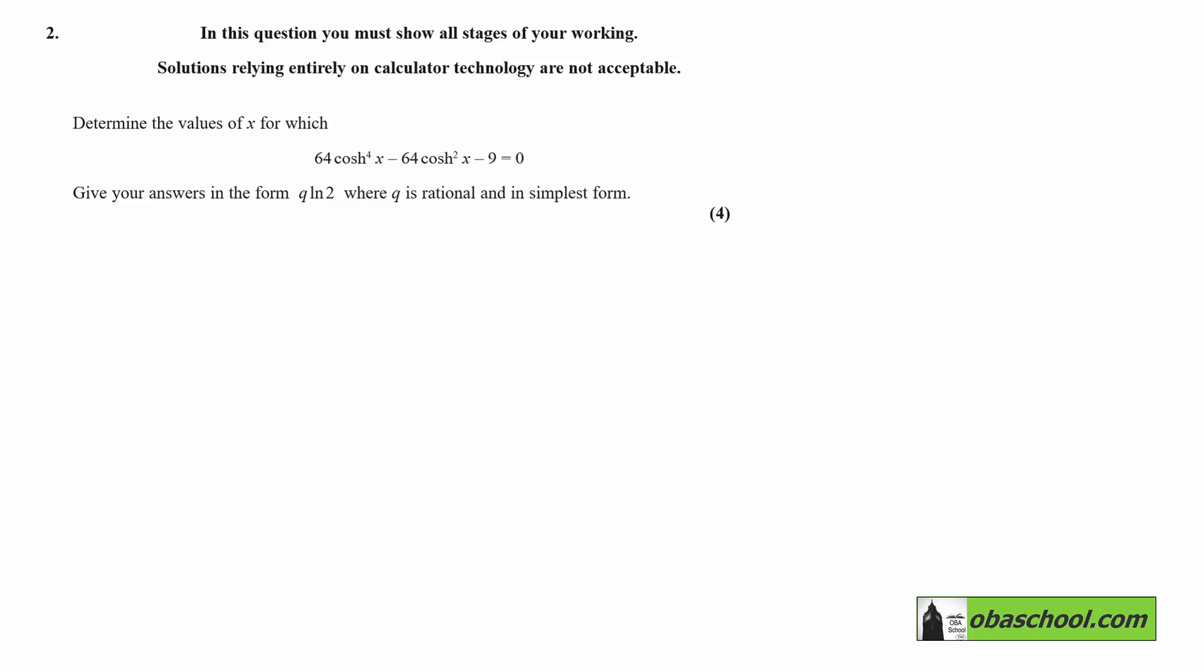Determine the values of x for which 64 cosh to the 4x minus 64 cosh squared x take away 9 is equal to 0. We want to give the answers in the form Q log 2 where Q is rational and in its simplest form.